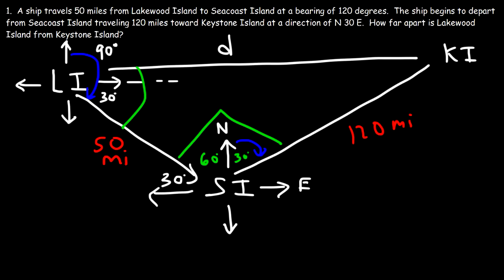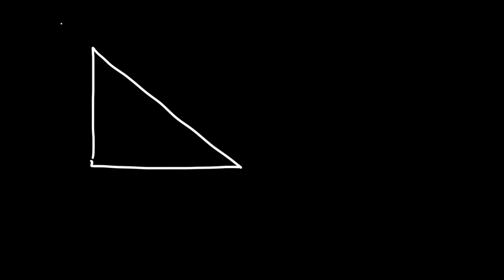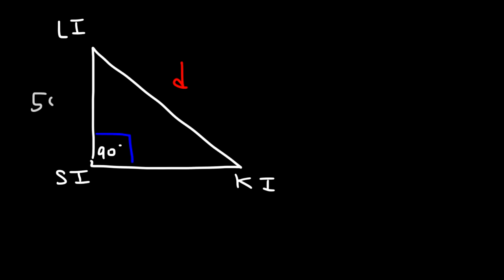So I'm going to redraw the picture. This is Lakewood Island, this is Seacoast Island, and Keystone Island. This is 90 degrees — our right angle — which means D is the hypotenuse. This side is 50 miles, and this side is 120 miles.